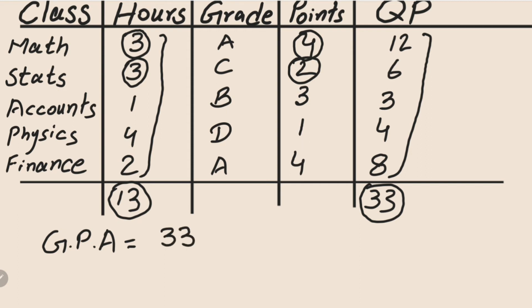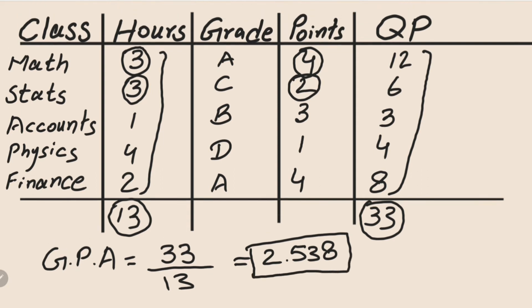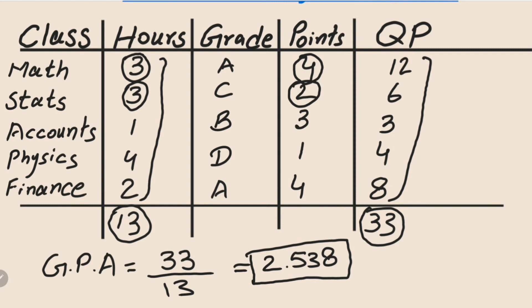We have total quality points of 33 and total credit hours of 13. When we divide them, our answer is 2.538. This is the total GPA for this particular semester with these subjects.